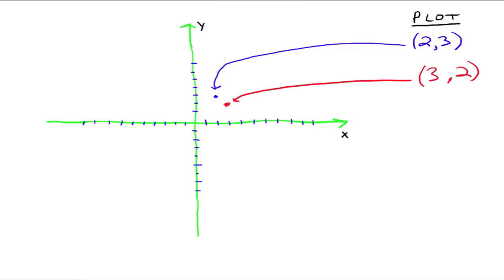What about the origin where the axes intersect? That spot is the ordered pair (0, 0). It doesn't go right or left on the x-axis and doesn't go up or down on the y-axis, so both the x-coordinate and y-coordinate are 0. The origin is the ordered pair (0, 0).